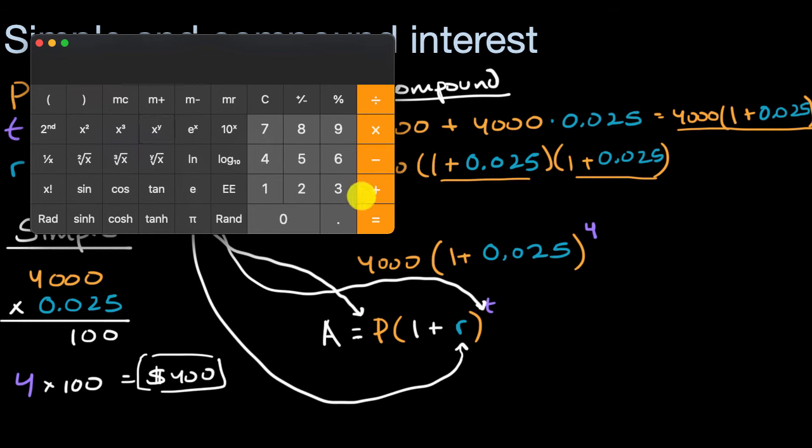So essentially whatever my principal originally was, I'm going to get this much times that amount as the total amount that I have. So let me just multiply that times 4,000.